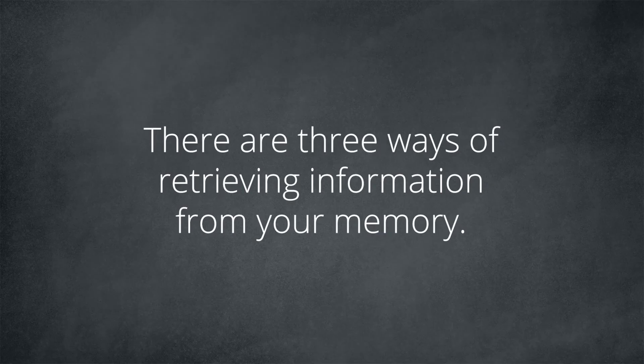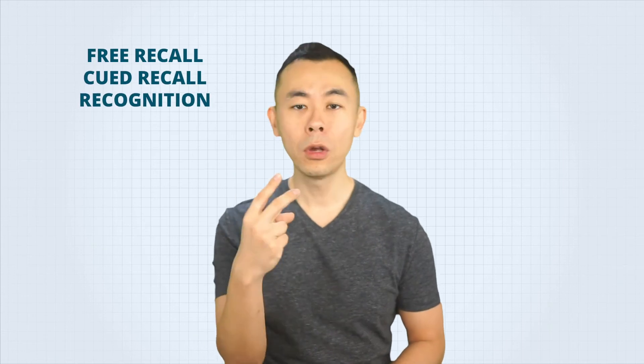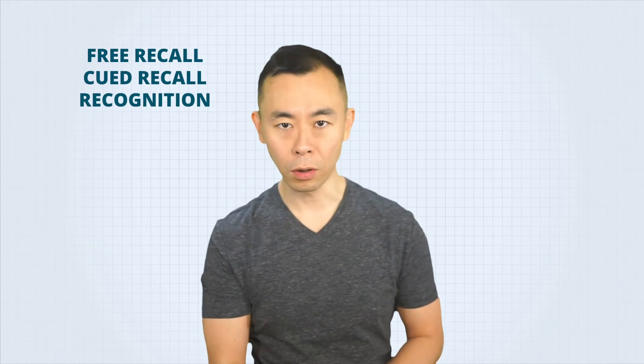There are three ways of retrieving information from your memory. When you try to retrieve information that is in your memory, your brain uses one of the three main methods: free recall, cued recall, and recognition.